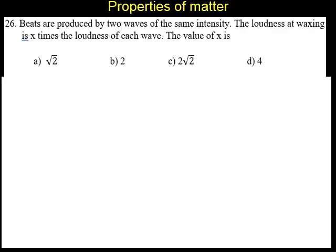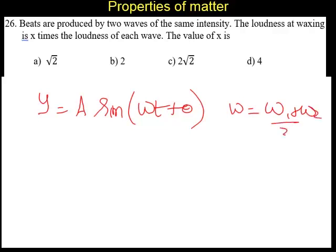Now, whenever there is a beat, the resultant equation for the beat is A sin(ωt + θ), where ω is the average frequency of both waves. Because they are equal, we can approximately say ω is the same for the two sources. Here A is the amplitude.